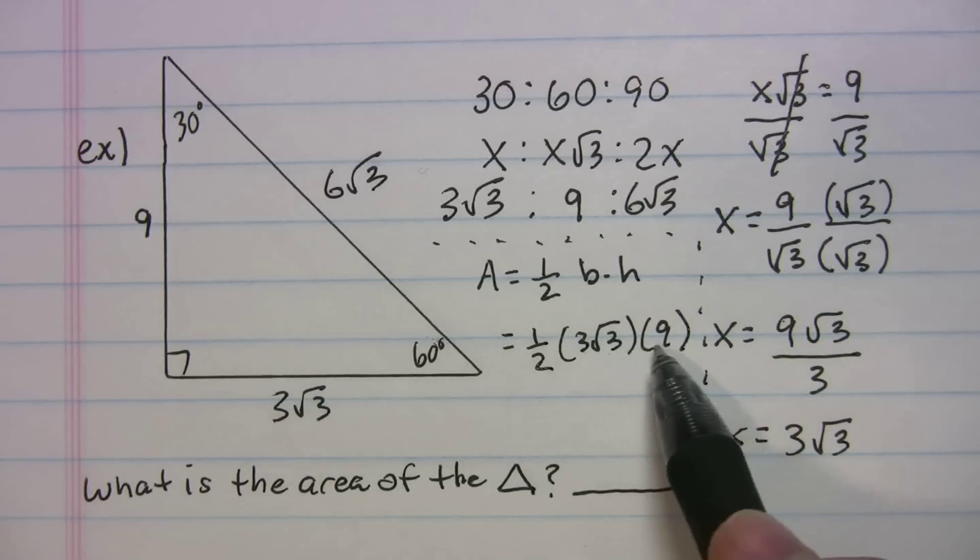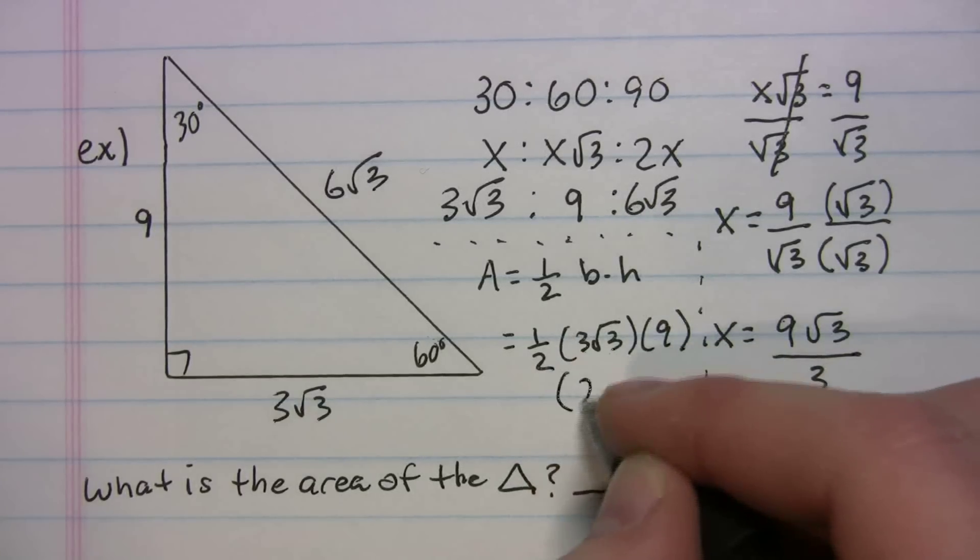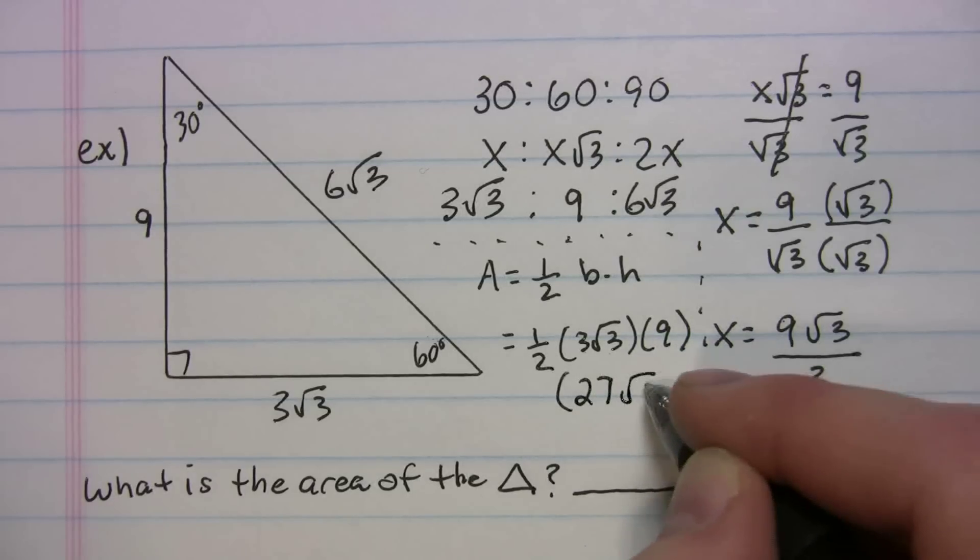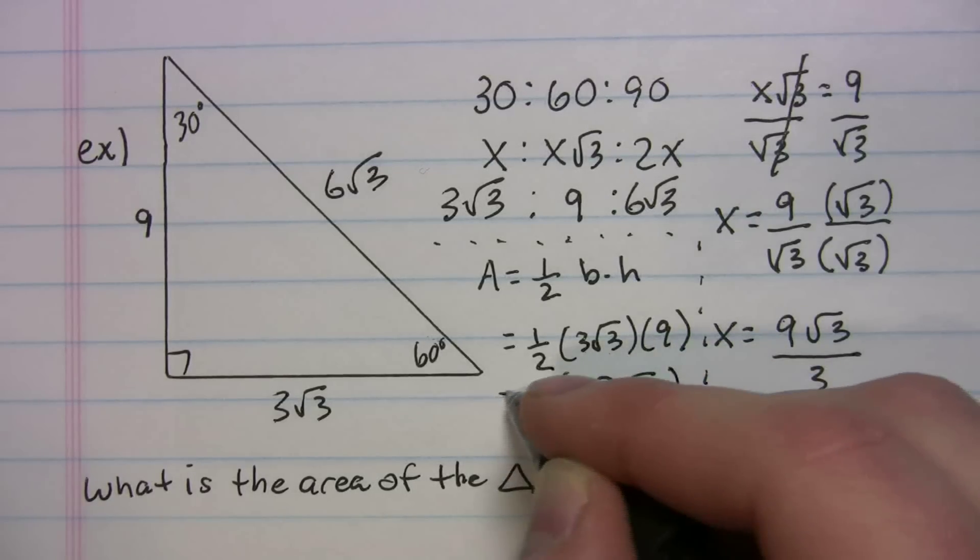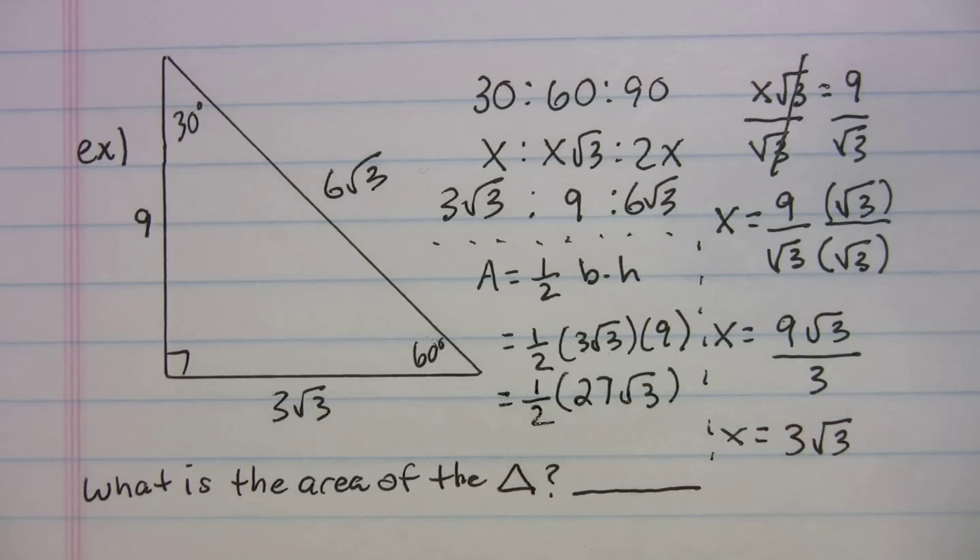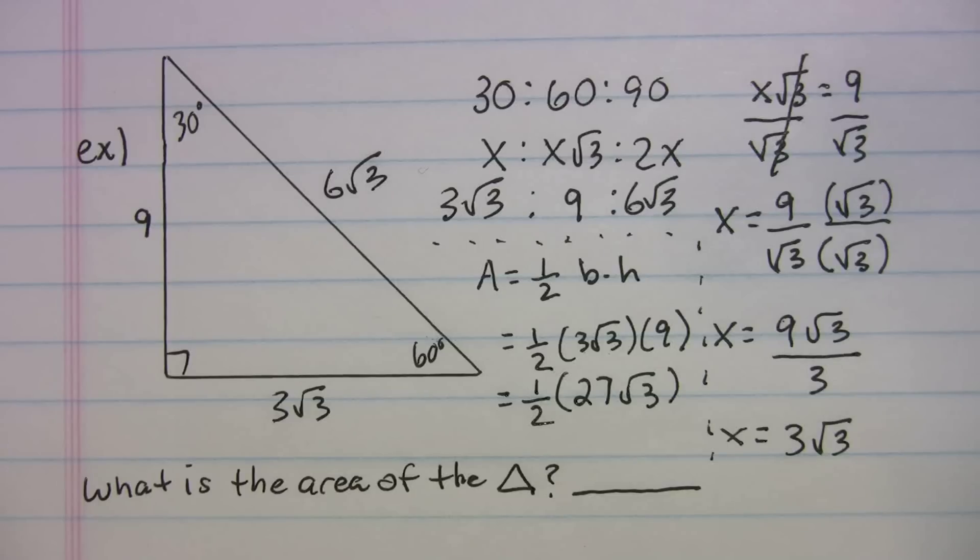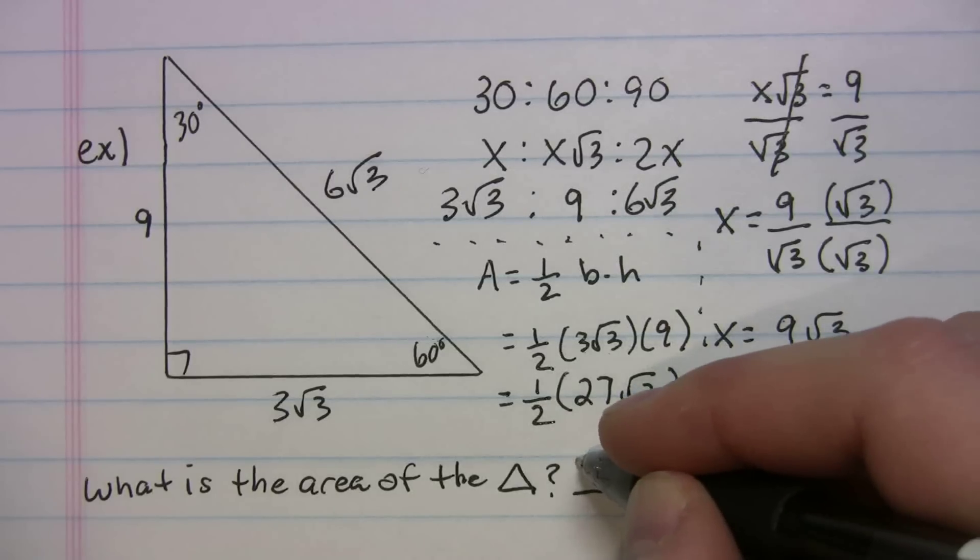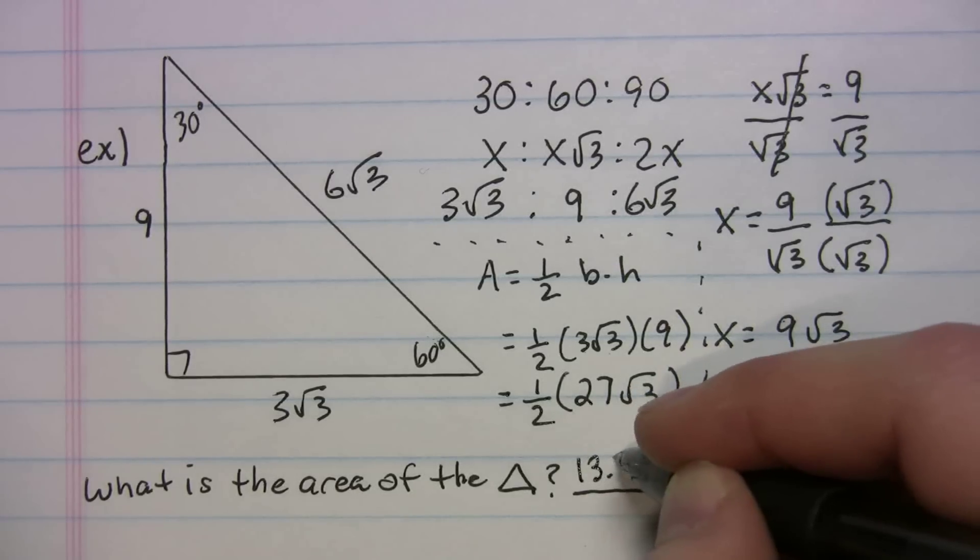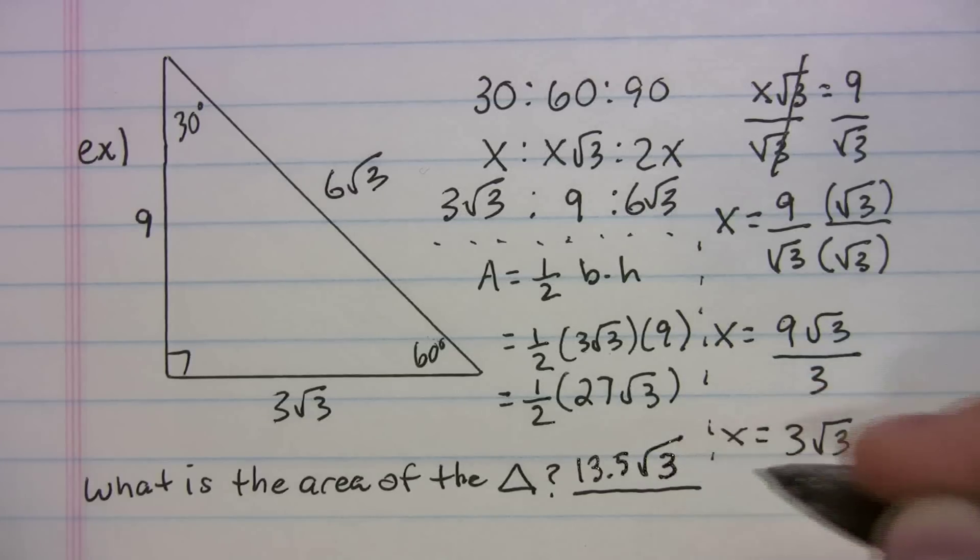So when we multiply here, 3 radical 3 times 9 is just going to be 27 radical 3 times 1 half. And it came out kind of ugly right here. So we'll do 27 times 1 half is 13.5 radical 3.